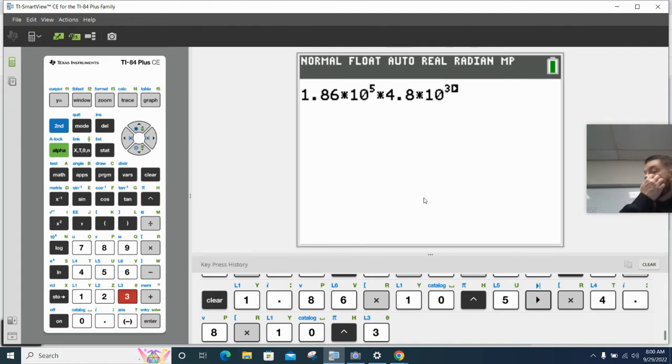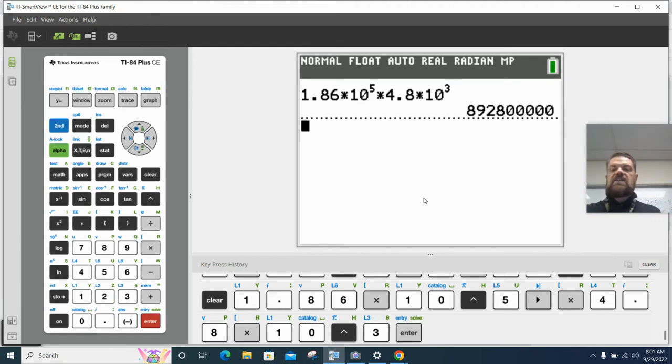Now, what you guys don't know is that Mr. Adams has his fancy teacher book here, and I wasn't sure if it was 10 to the 5th and 10 to the 3rd because it's a little blurry on my end. When I looked at my teacher book, the answer was 10 to the 8th. Where do we get 10 to the 8th from? Adding the powers of 10 together. 5 plus 3 equals 8. So now when I hit enter, I get this number.